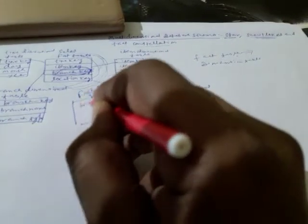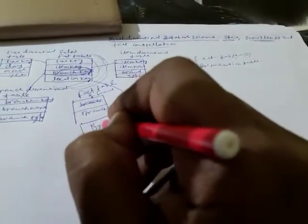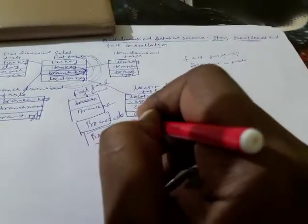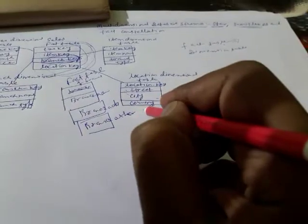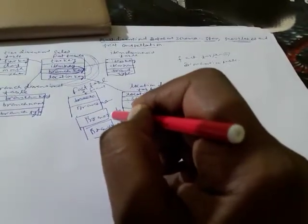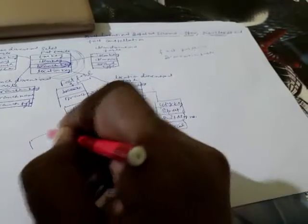So we create one more fact table for branch. The branch fact table can include branch name, branch address, and other branch details. These are related with the city and other parts of the details — a details table is created this way.